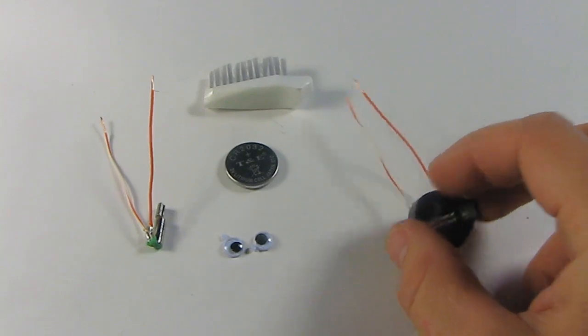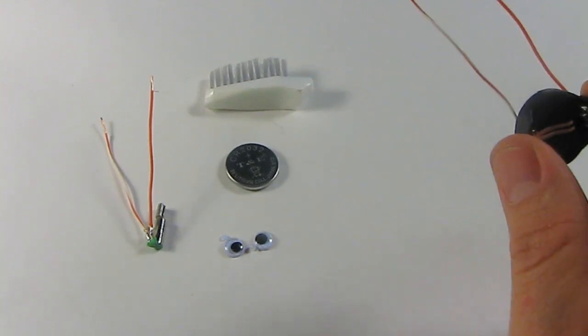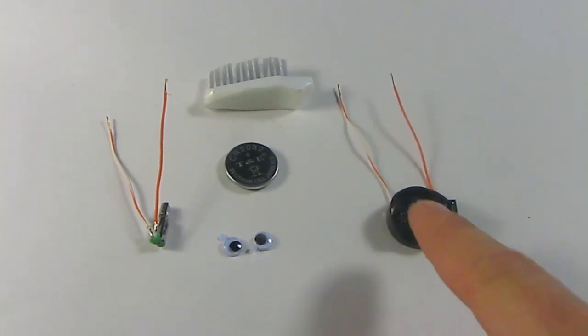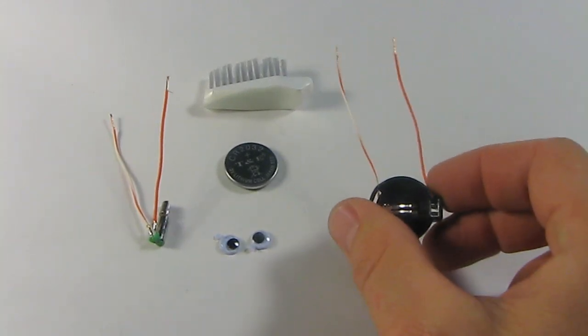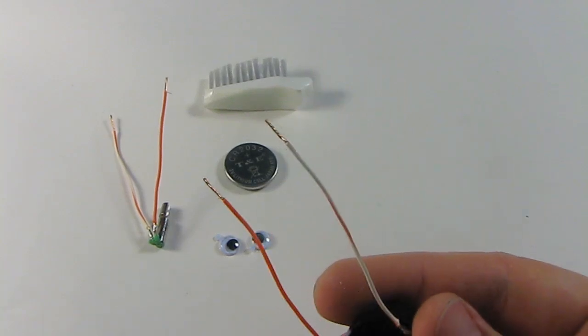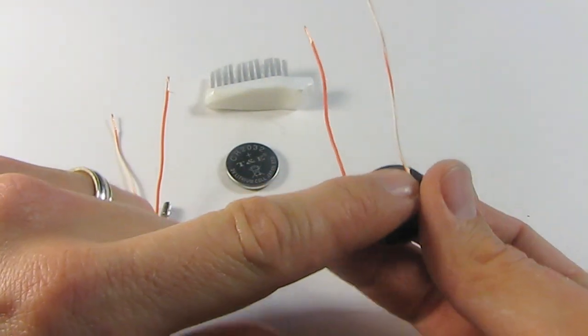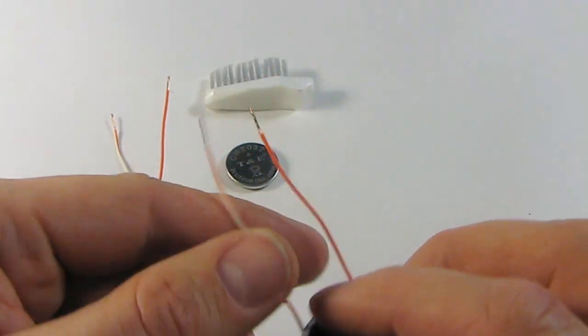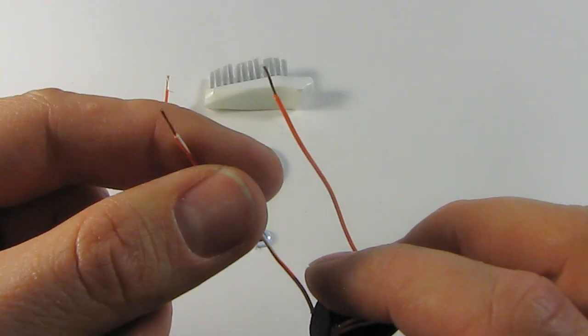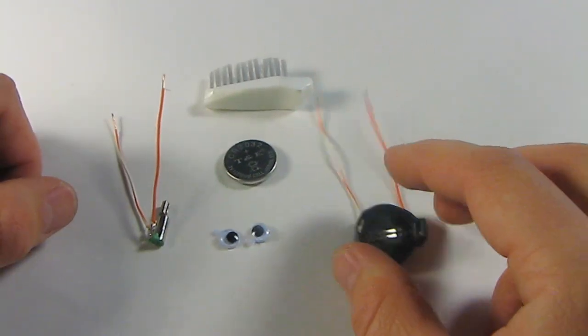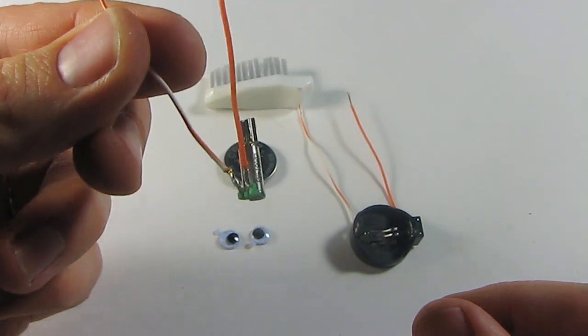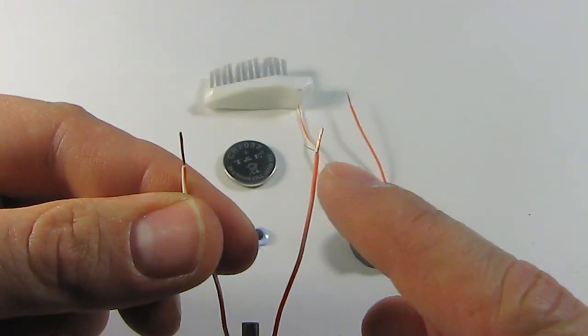What I use is a coin cell holder with two wires soldered onto the ends and then the ends stripped off. This is stranded wire, not solid core. Then a pager motor, also with two wires soldered and the ends stripped off.